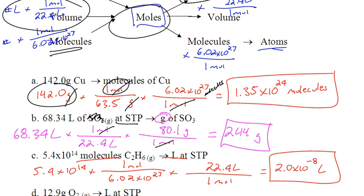Add up SO₃. One S, three O's gives you 80.1. Plug those numbers into the calculator. 68.34 divided by 22.4 times 80.1 gives you 244 when you round to three sig figs. Pretty simple.